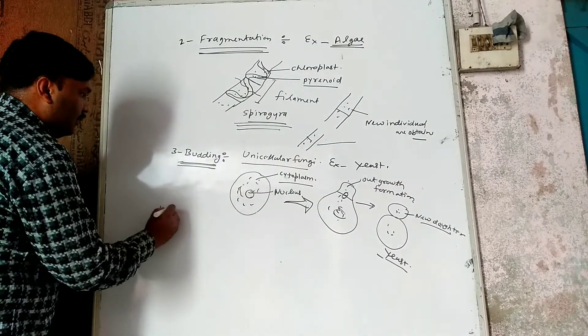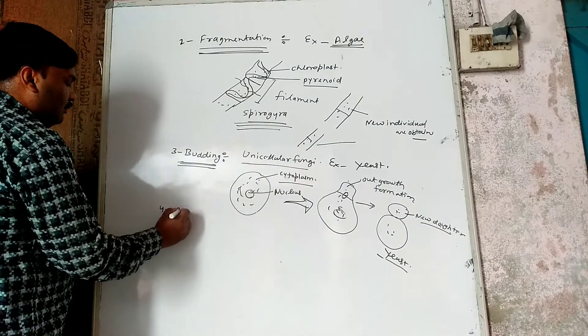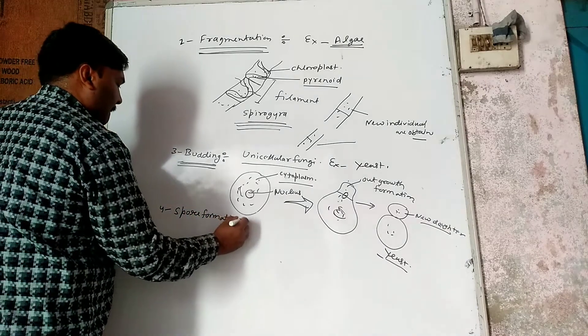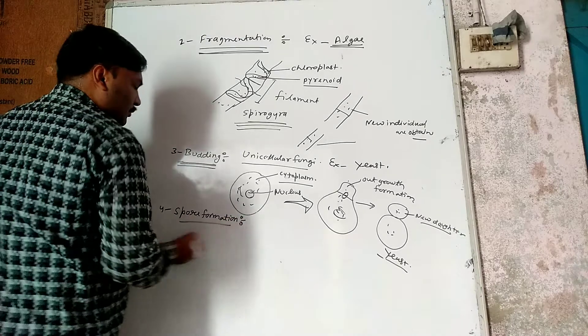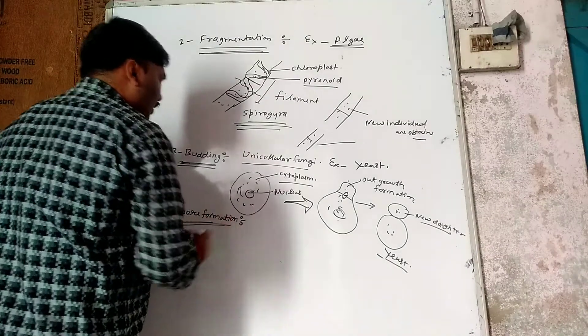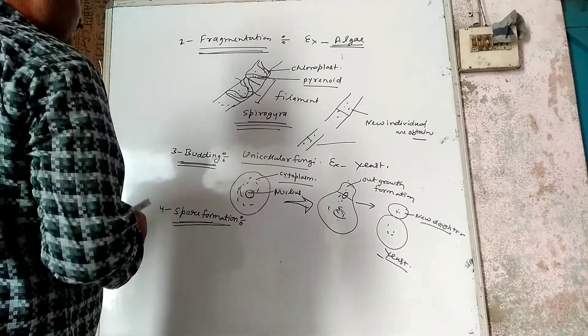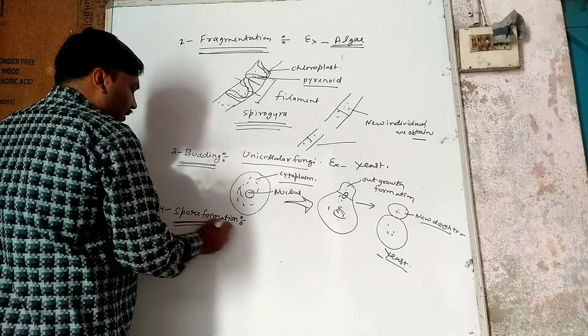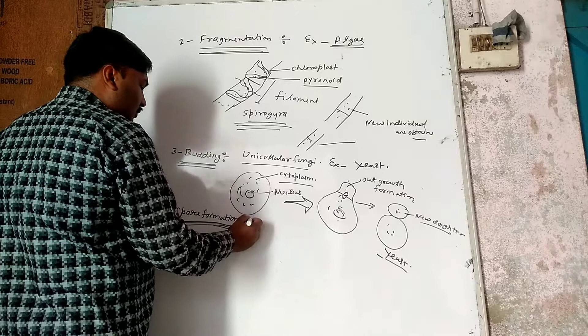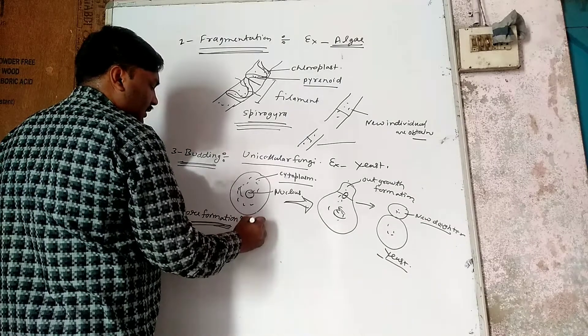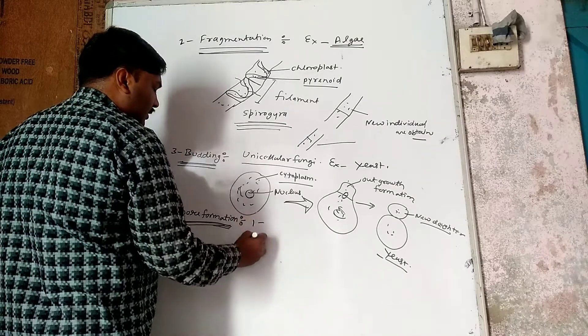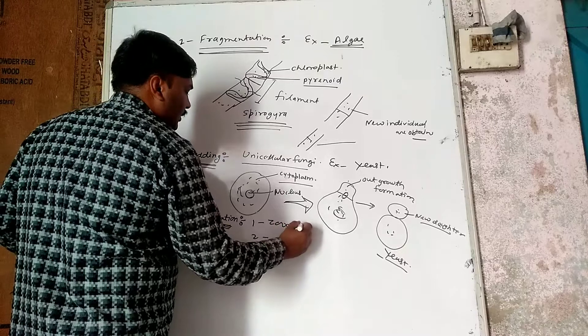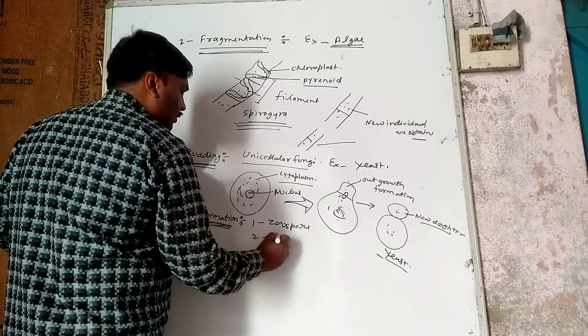Our fourth is spore formation. The spores that you know are divided into three types. Spores are divided and separated into different categories.